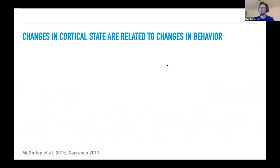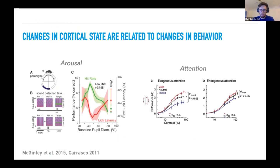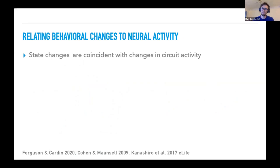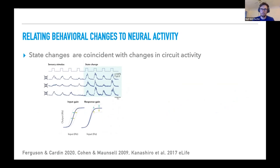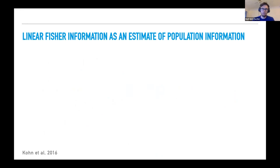The motivation for the study is that changes in cortical state are related to changes in behavior. For example, the hit rate of a rodent performing a sound detection task varies as a function of its arousal state. Similarly with attention, the performance of an animal performing a discrimination task varies as a function of its attentional state. But importantly to neuroscientists, these state changes are coincident with changes in circuit activity.